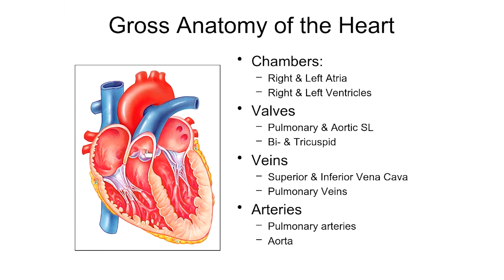The role of the pulmonary semilunar valve is to ensure that when the ventricle contracts and pushes blood up into this vessel toward the lungs, that blood doesn't backflow back into the right ventricle. The aortic semilunar valve is on the left side of the heart, sitting between the left ventricle and the aorta, which you can see right here. When the left ventricle contracts, we want the blood to go up into the aorta and out to the rest of the body — the aortic semilunar valve ensures none of that blood backflows into the left ventricle.